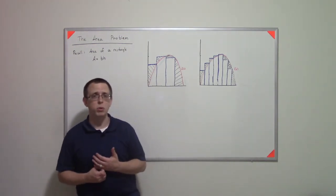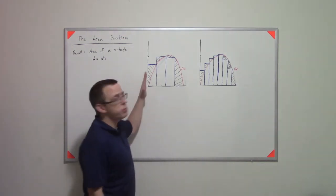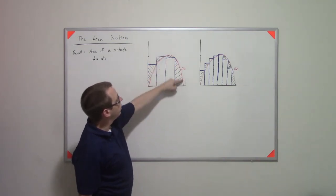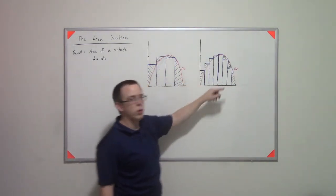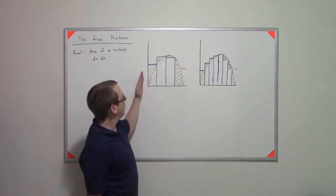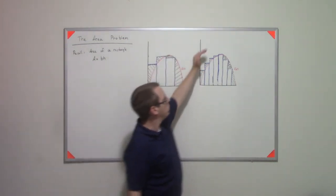So in red, which may be difficult to see, I have a function. And it's the same function on both of these axes. I have, it goes up, it comes down, it goes up, it comes down.